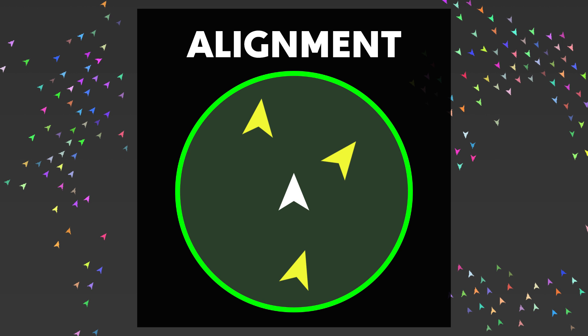Alignment encourages the agents to move in a common direction. Each agent will set its heading to the average heading of all its neighbors.